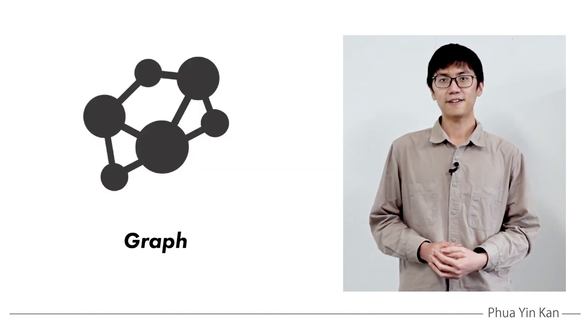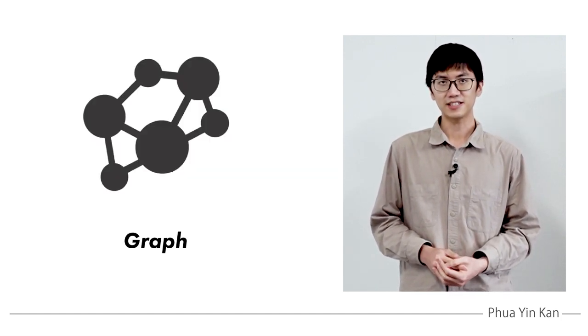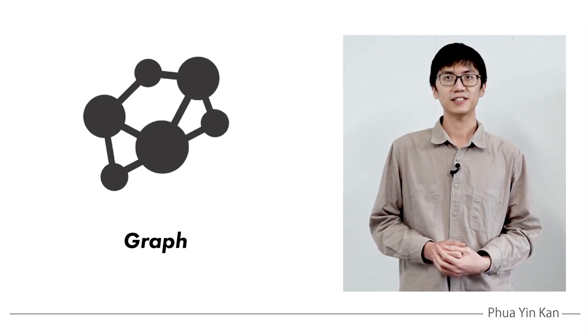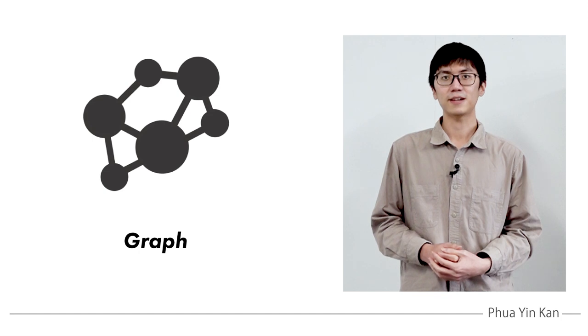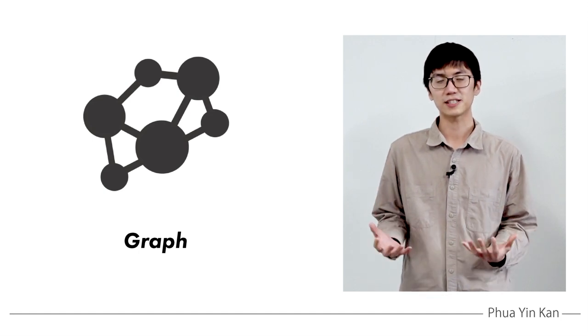Therefore, we think that graph representation of polymer structures could be an answer to solving such issues due to the close proximity of chemical structures with graph networks.